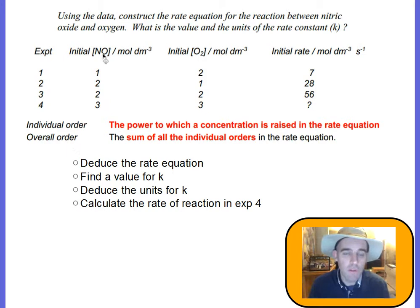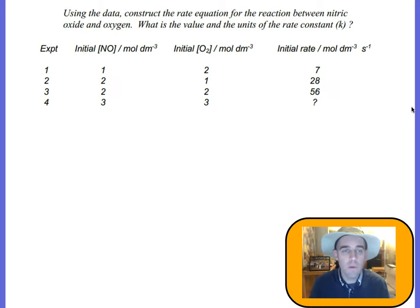If we add up those orders of the two reactants, we get the overall order of the reaction. From this, we want to work out the rate equation, find the value for k, find the units for k, and find the question mark here. So what do we do then?